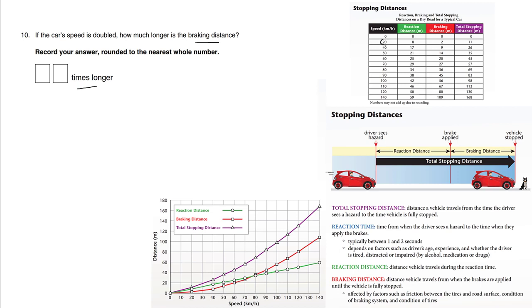Suppose the speed is 20 and the braking distance is 2. So if you double your speed from 20 to 40, the 2 becomes a 9. So what is 9 divided by 2? It's about 4.5. So I'm not quite sure which number we're looking at right now.